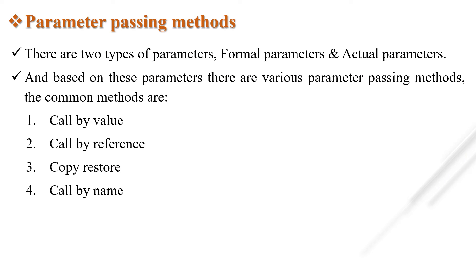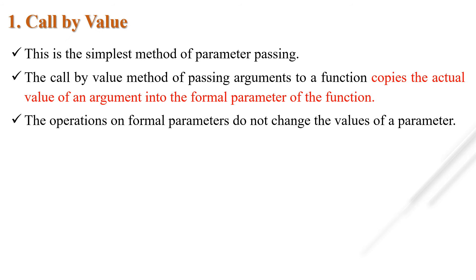The next topic is parameter passing methods — call by value, call by reference, copy restore, and call by name, which you have already learned. There are two types of parameters: formal and actual. The common parameter passing methods are: call by value, call by reference, copy restore, and call by name. Call by value is the simplest method. It copies the actual value of an argument into the formal parameter of the function.